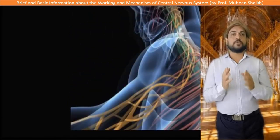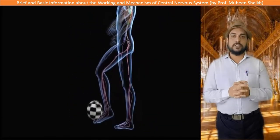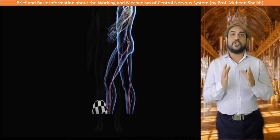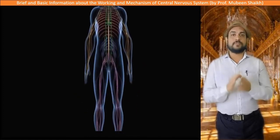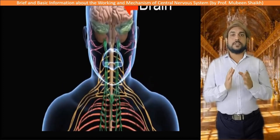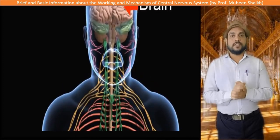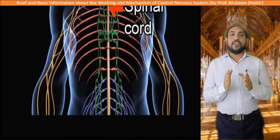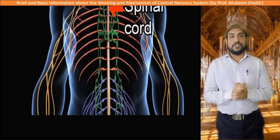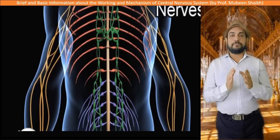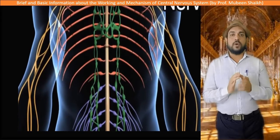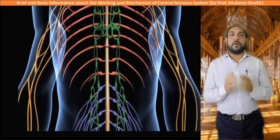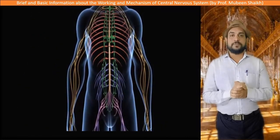Even though all sense organs work in different ways, they all keep sending impulses to the central nervous system, which generates appropriate and suitable responses to different muscles of our body, causing them to contract and produce that response. This is a brief review of the functioning and working of the central nervous system, consisting of the brain, spinal cord, and their respective nerves. Thanks a lot!